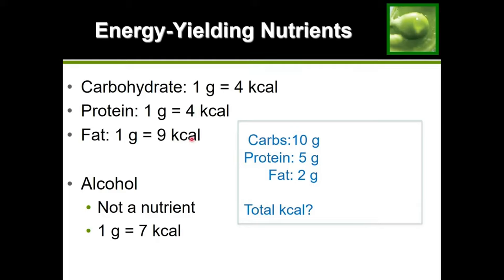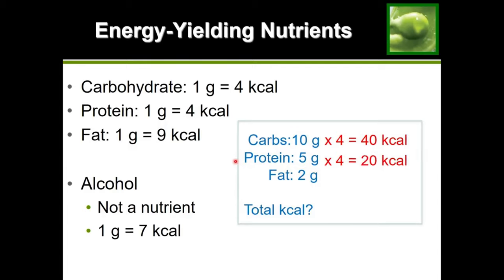Starting with carbohydrates: each gram provides four calories, and we have 10 grams, so that's 10 times 4, which gives us 40 calories from carbohydrates. For protein: each gram provides four calories, and we have 5 grams of protein, so that's 5 times 4, which gives us 20 calories from protein.